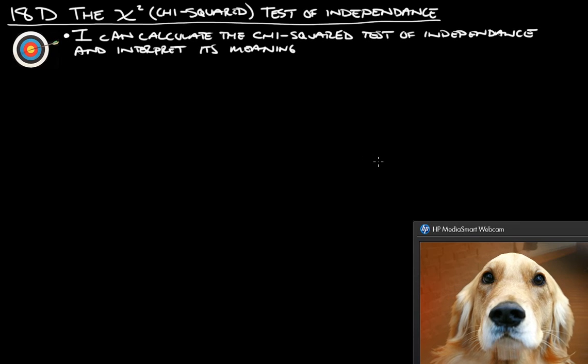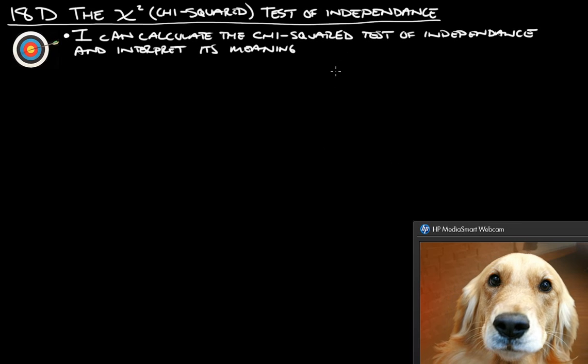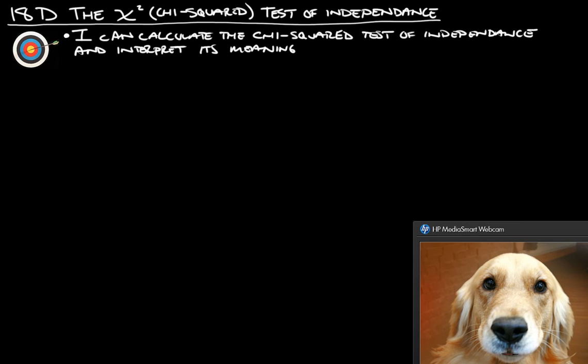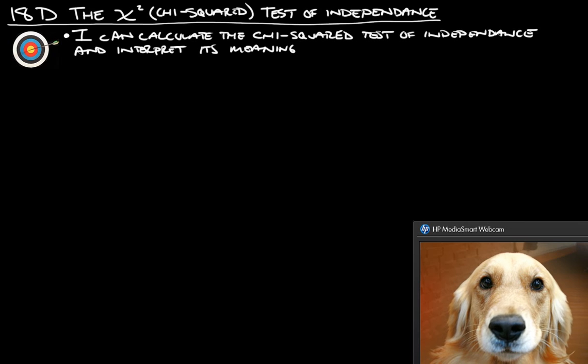Hello, welcome back. This is the second part of the 18d notes on chi-squared test of independence. On the last one we talked about how to do all the calculations by hand. We're going to talk about some more information you're going to need, and then we're going to be able to actually do some of this on our graphing calculator to make our life easy.